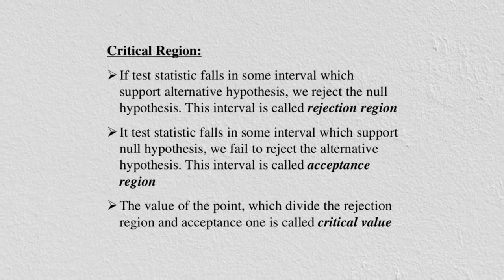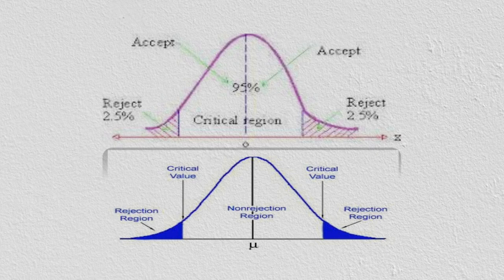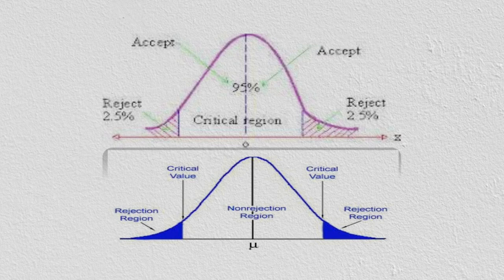The point that divides the rejection region from the acceptance region is called the critical value. Looking at the bell-shaped curve, the rejection percentage is 2.5% on each side, shown by the shaded areas on both ends of the x-axis. The accepted region in the middle is 95%, consistent with confidence intervals. The critical value separates the non-rejection region from the rejection region, with mu at the center.